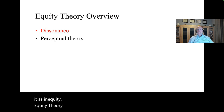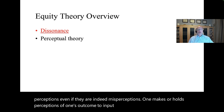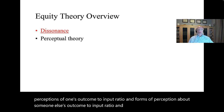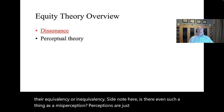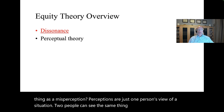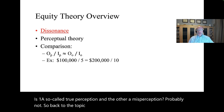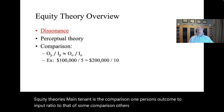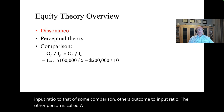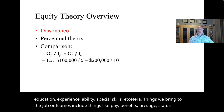Equity theory is a perceptual theory, and it is important to study perceptions even if they are misperceptions. One holds perceptions of one's outcome-to-input ratio and forms a perception about someone else's outcome-to-input ratio, then forms a perception about their equivalency or inequivalency. Equity theory's main tenet is the comparison of one person's outcome-to-input ratio to that of a comparison other's outcome-to-input ratio. Inputs include things like effort, education, experience, ability, and special skills — things we bring to the job. Outcomes include things like pay, benefits, prestige, and status — things we get from the job.